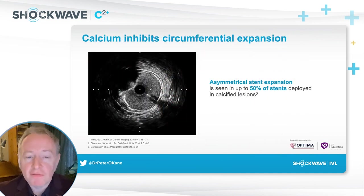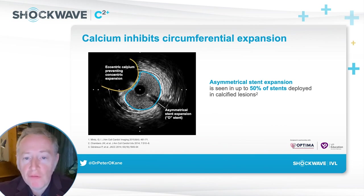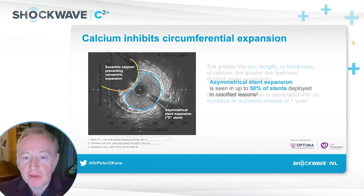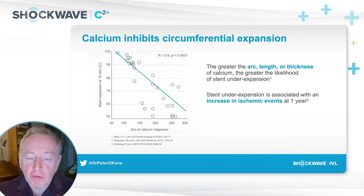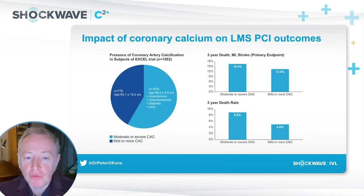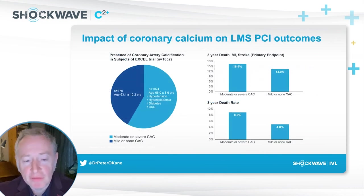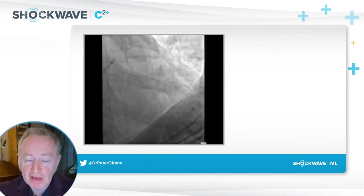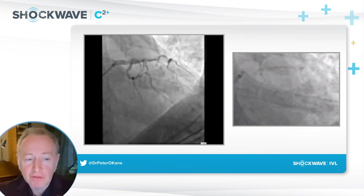The presence of calcium will obviously affect how we expand the stent itself, and if we have nodules we'll often see asymmetric stent expansion — it's probably more common than we think. The arc of calcium is directly related to how much under expansion we will have, and that will lead to ischemic events. From the EXCEL trial, both surgical and PCI, the degree of calcium will affect outcomes at both one year and three years.